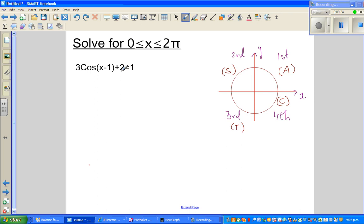So the first thing that you undo is this plus 2. So you have to take away 2 from this side. If you take away 2 from this side, you have to take away 2 from this side. So this becomes 3cos(x-1) + 2 = 1, 3cos(x-1) - 1 = -1.